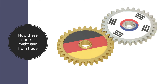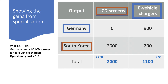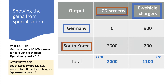Now we have to show how these countries might gain from trading with each other. We need to work out a mutually beneficial terms of trade — the trade of LCD screens for vehicle chargers that benefits both countries. The total outputs of 2,000 and 1,100 won't change; we're simply going to trade the numbers in the table above. Without trade, Germany swaps 600 LCD screens for 450 e-vehicle chargers, getting 1.3 LCD screens for every vehicle charger. Without trade, South Korea would have to give up two LCD screens to get one extra vehicle charger — so they want to do better than that. Equally, Germany wants to get more than 1.3 LCD screens for every e-vehicle charger.